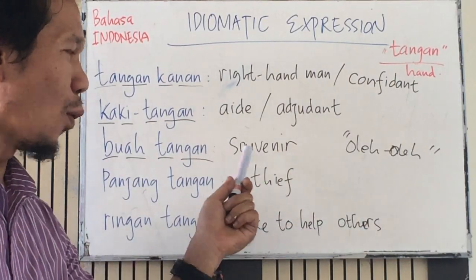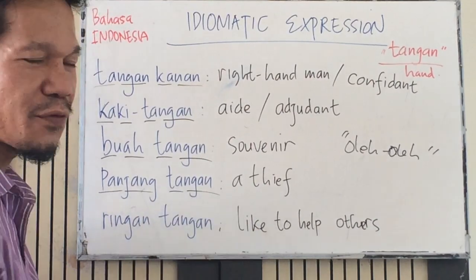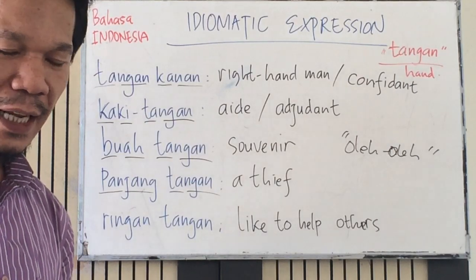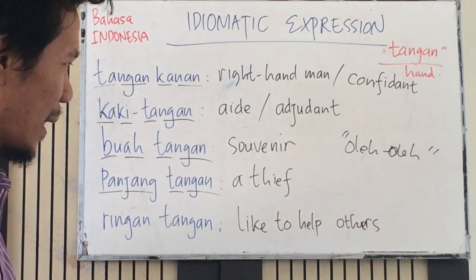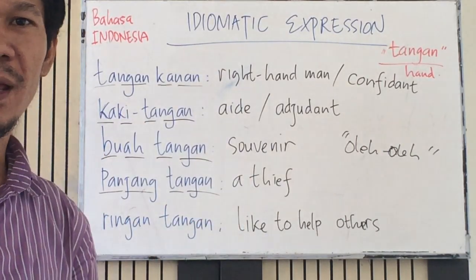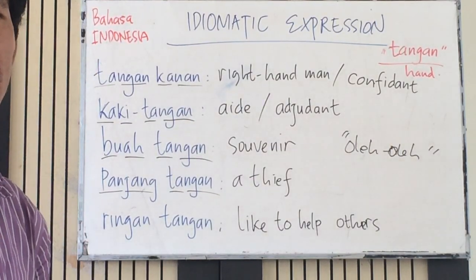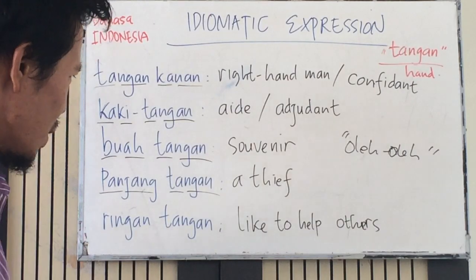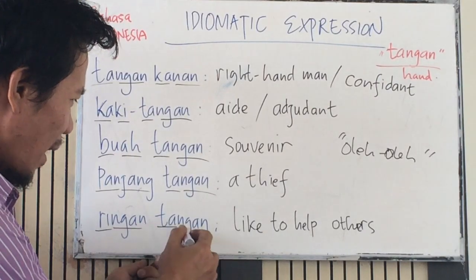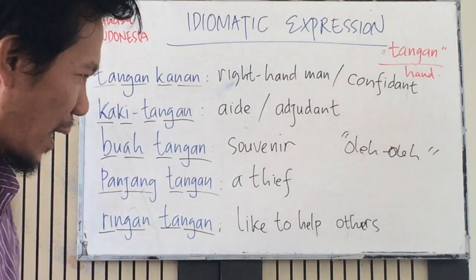The fourth expression is 'panjang tangan.' This is very negative. Literally it translates to 'long hand,' but as an idiomatic expression in Bahasa Indonesia it means a thief — a person who likes to steal someone's stuff.